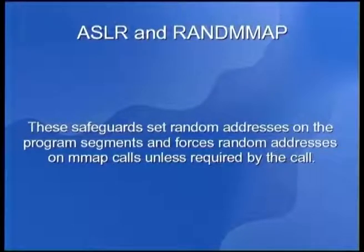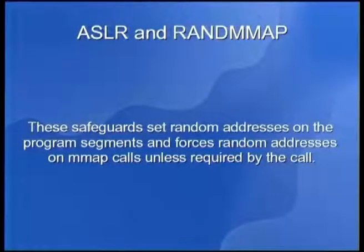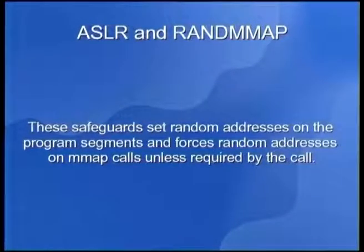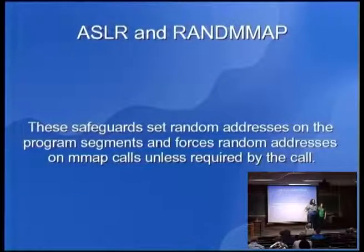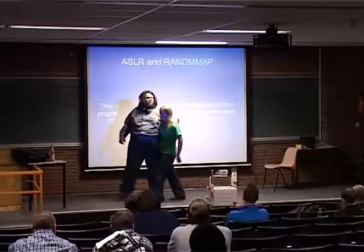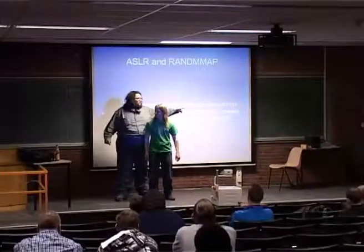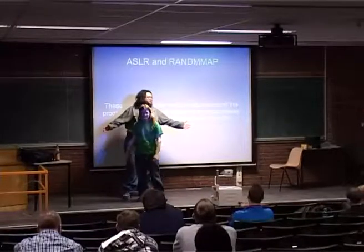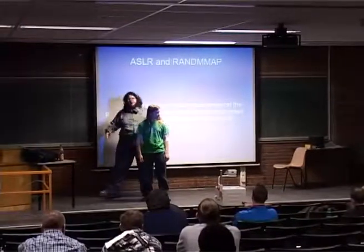We also have ASLR and randmmap, which is the counterpart of PIE/PIC on the kernel side. Basically, if a volunteer here is the code, we execute the program the first time and he's at one place, then I'm the kernel and I move him somewhere else for the next execution. Since he sits in different places, if you don't know where he is, you cannot run the code.